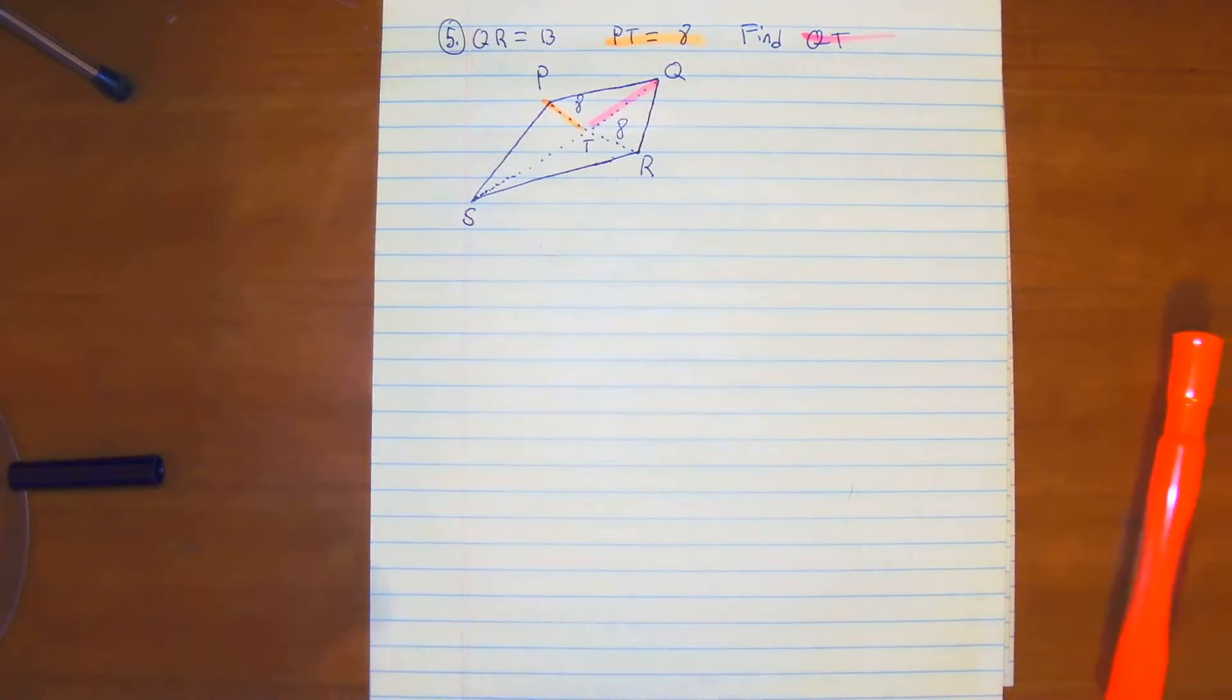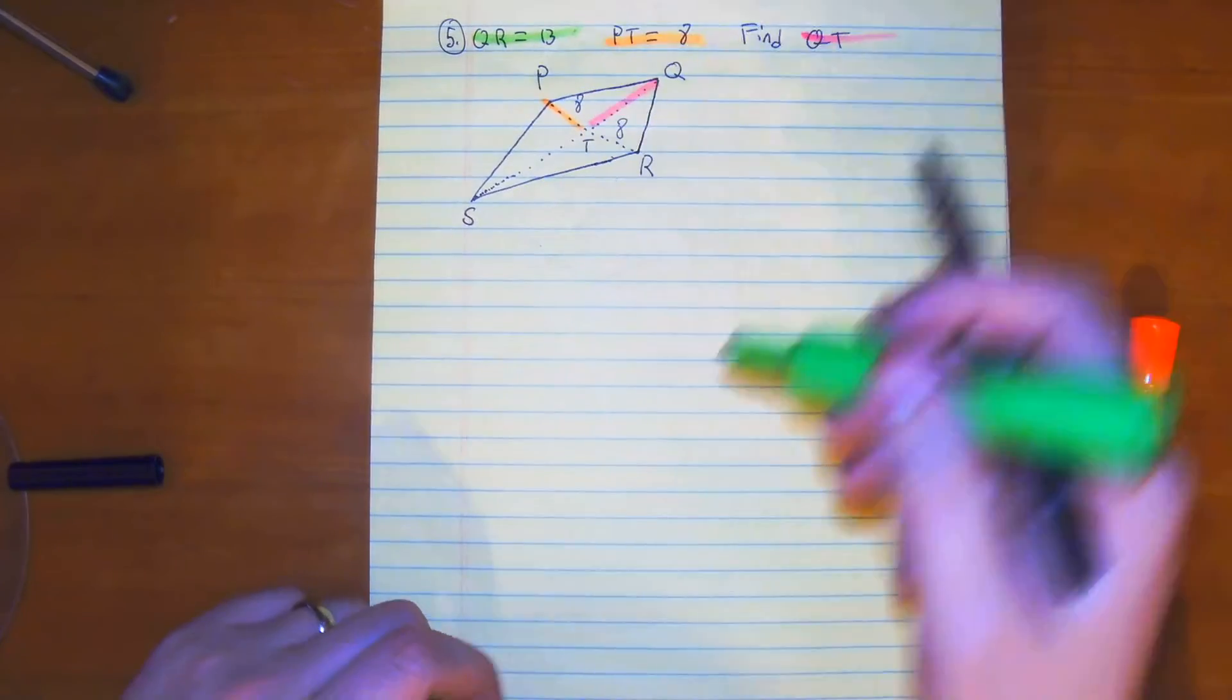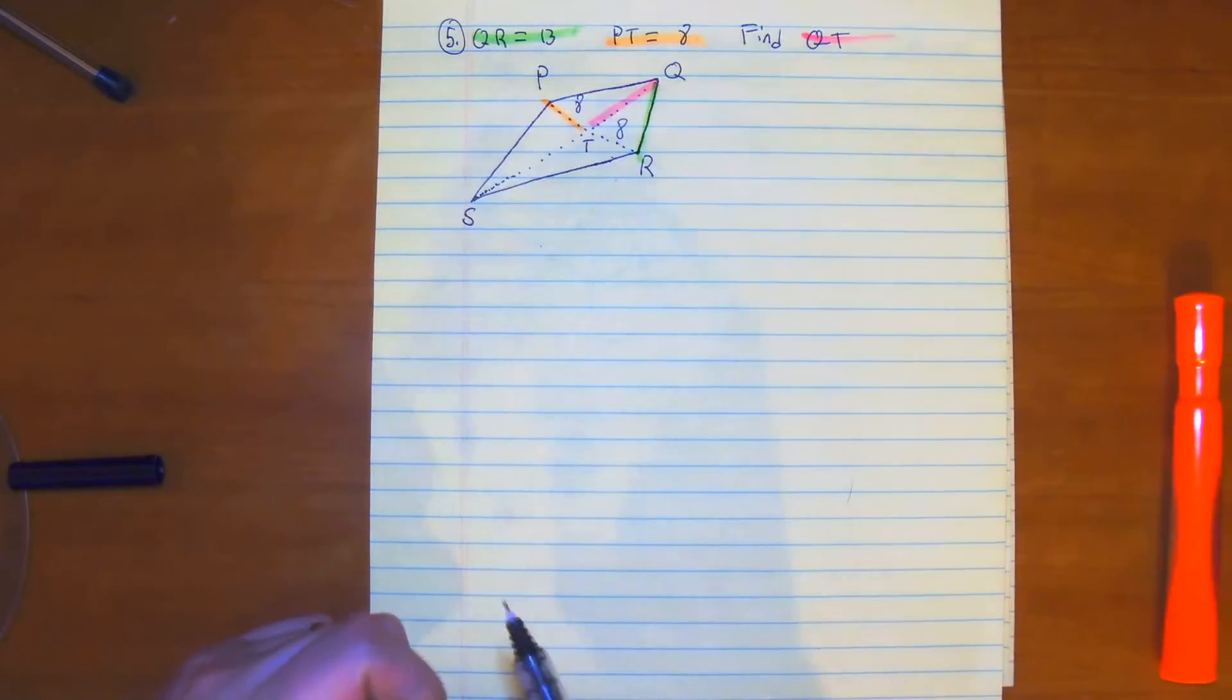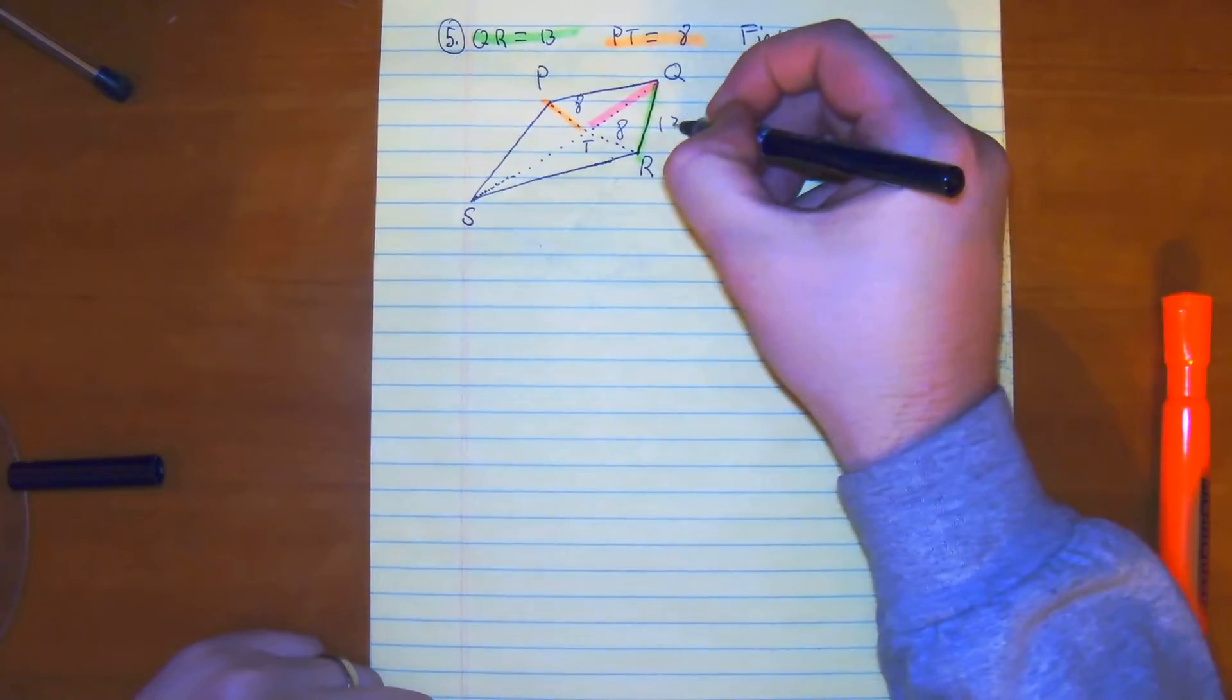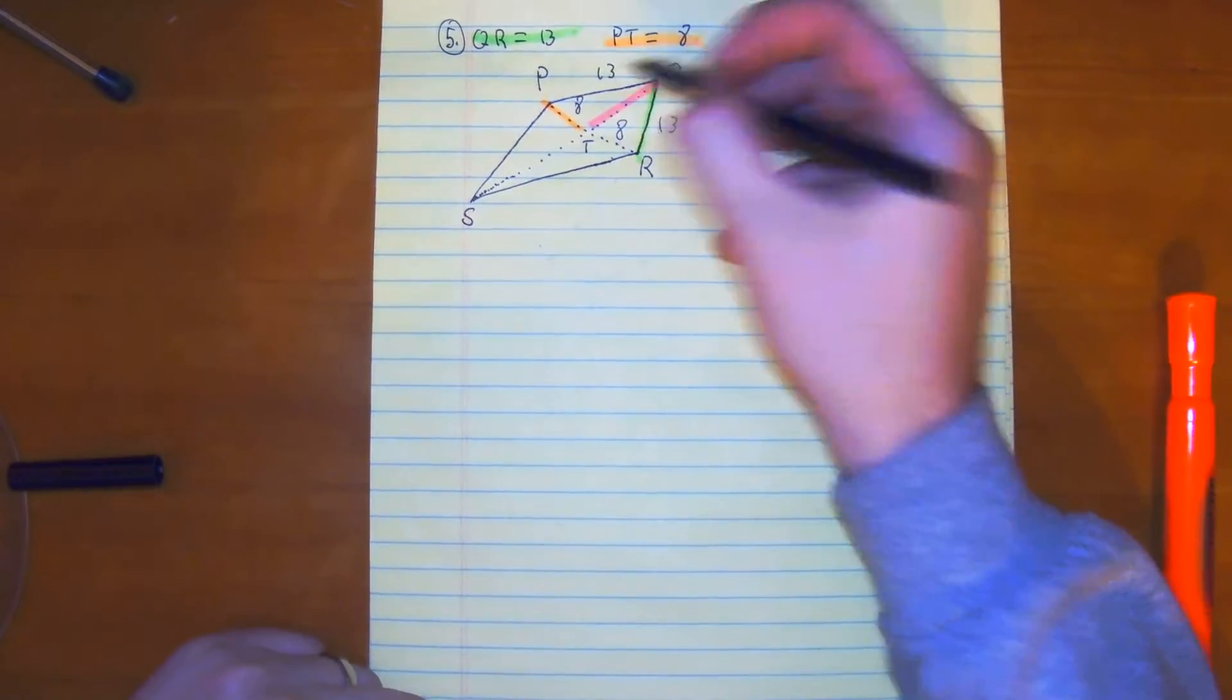And then we have QR, which is 13. And since it's a kite, this is also 13 over here.